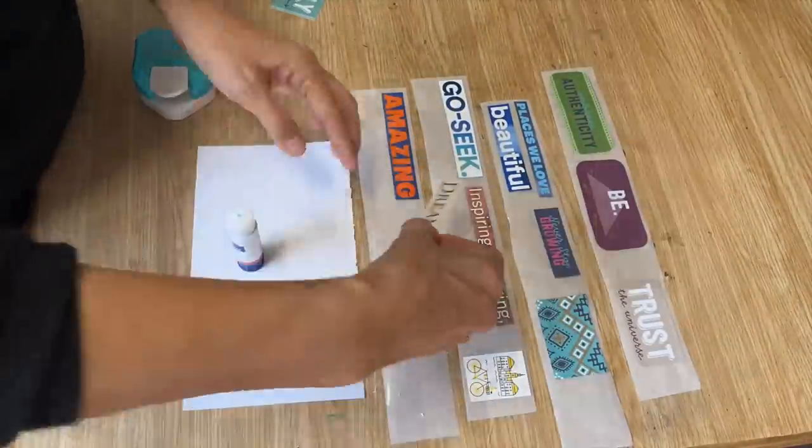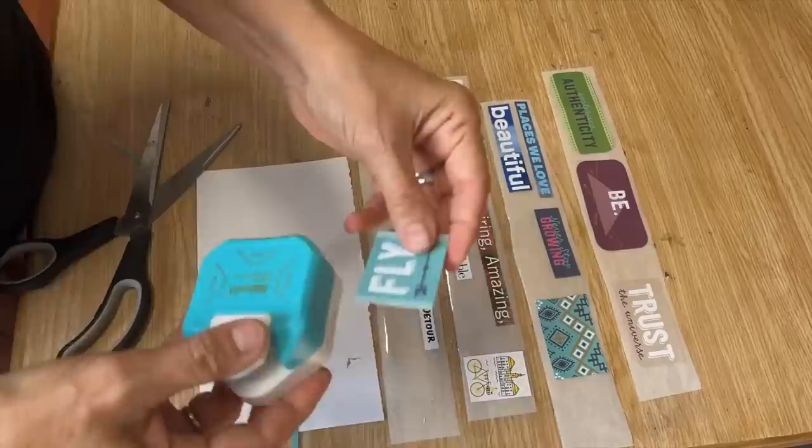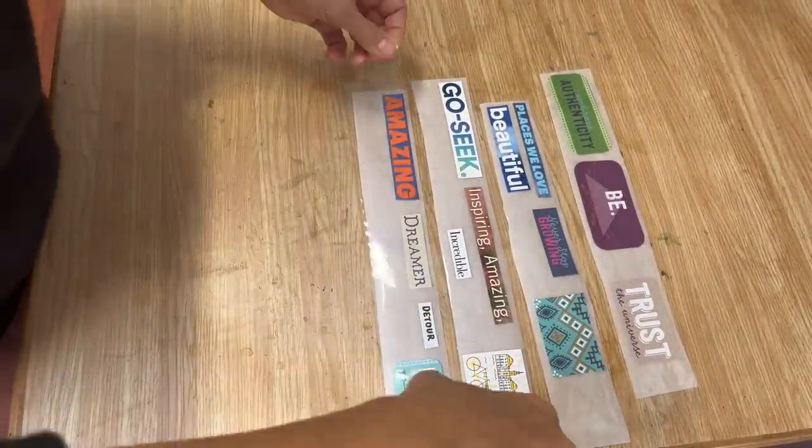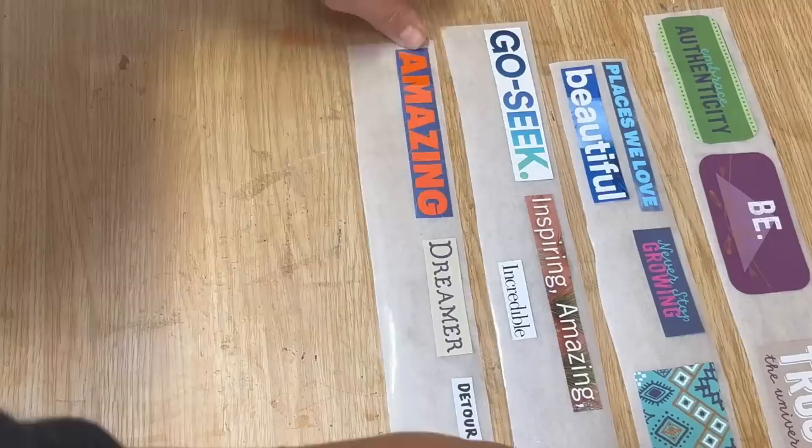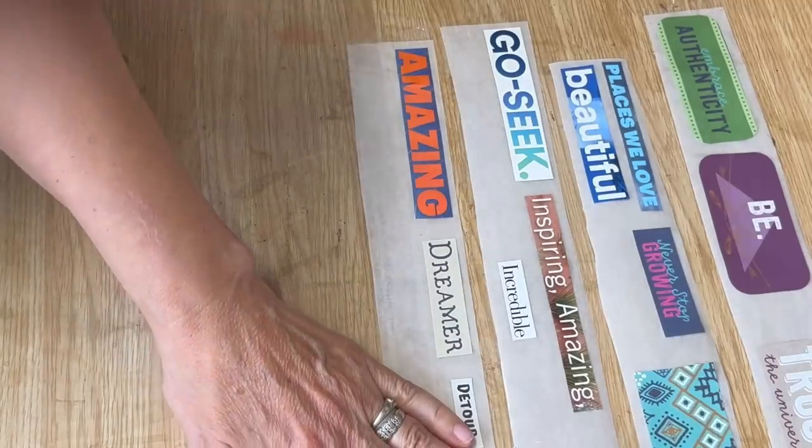You can just imagine the possibilities with this DIY. The kids can cut out little pictures from their coloring books or pages that they have drawn and turn them into stickers. Now we're gonna take the packing tape and lay it right over top of those pieces of paper.